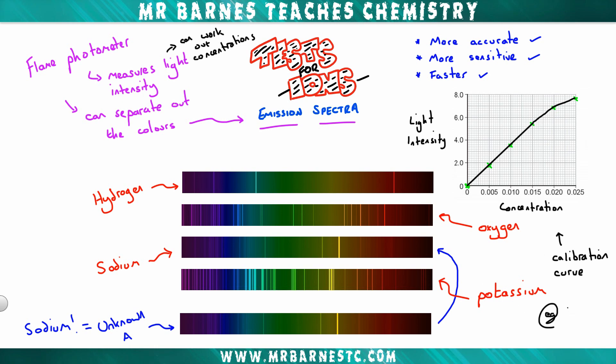So for example if you're given something with an intensity of 4.2 all you do is you find 4.2 on your graph on your light intensity, you draw across, you draw down, and you can work out the concentration of your unknown solution. So for example concentration of x is 0.11.